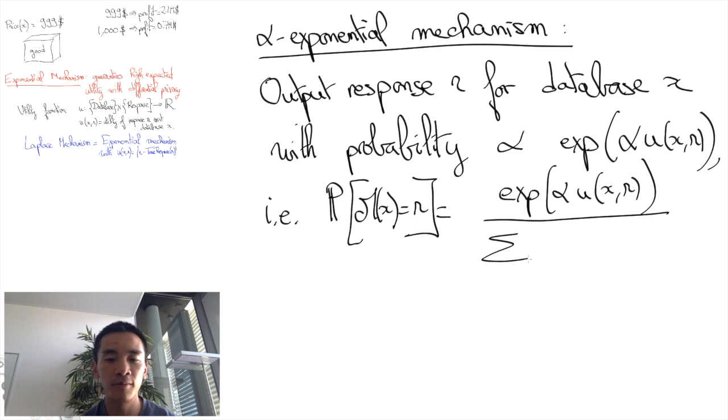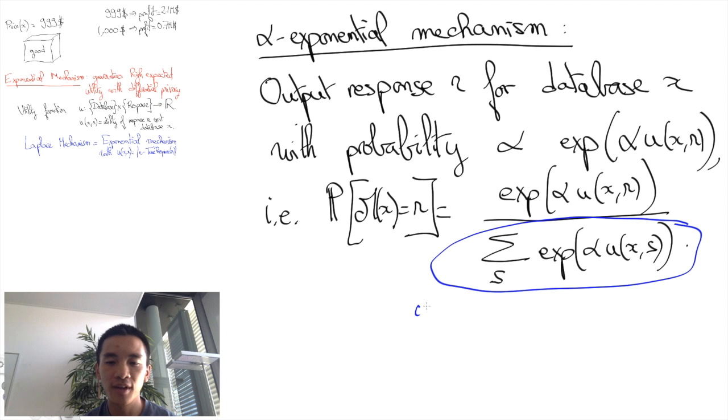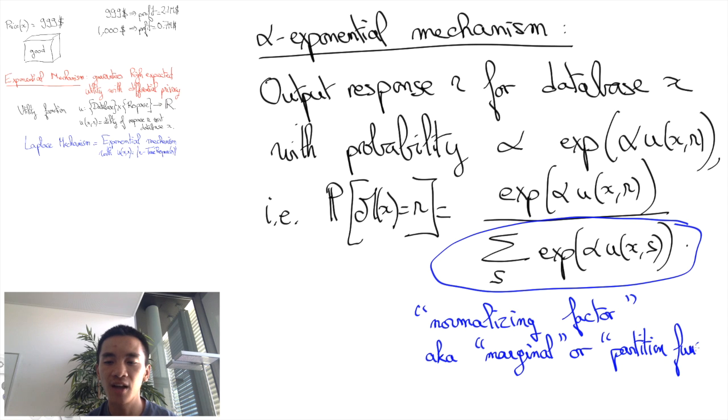That is, we are going to divide by the sum for all possible answers s of the exponential of alpha times the utility for answer s. But don't overthink the denominator here. It is just a normalizing factor so that probabilities add up to 1.